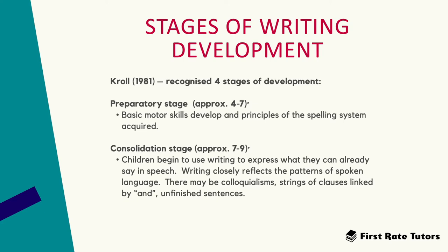Another theorist, Kroll, recognised four stages of development. The first, taking place between four to seven years old, he termed the preparatory stage, where basic motor skills develop and principles of the spelling system are acquired by children — they start understanding the ABCs and so on.